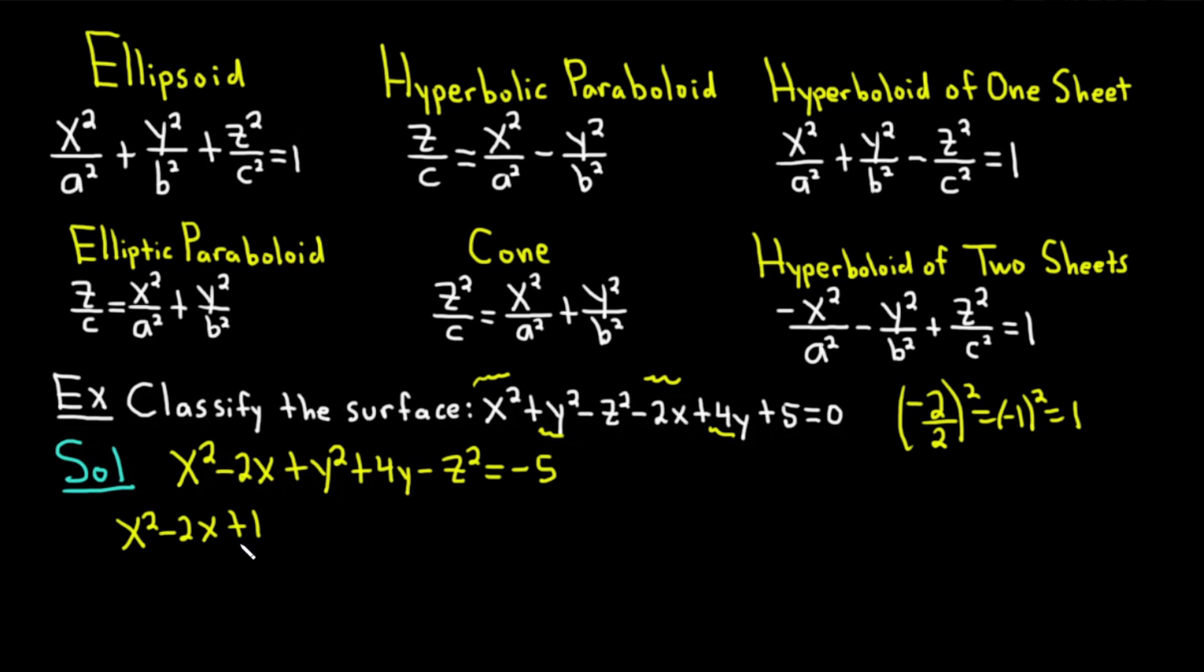You might say, hey, you can't do that. You can't put a 1 there. You're right, I can't. But I will fix it later. When we finish completing the square, I'm going to add a 1 to the other side, which makes it okay.